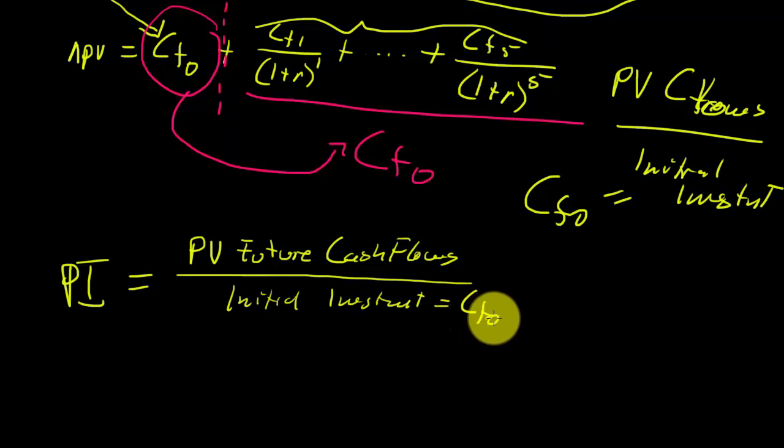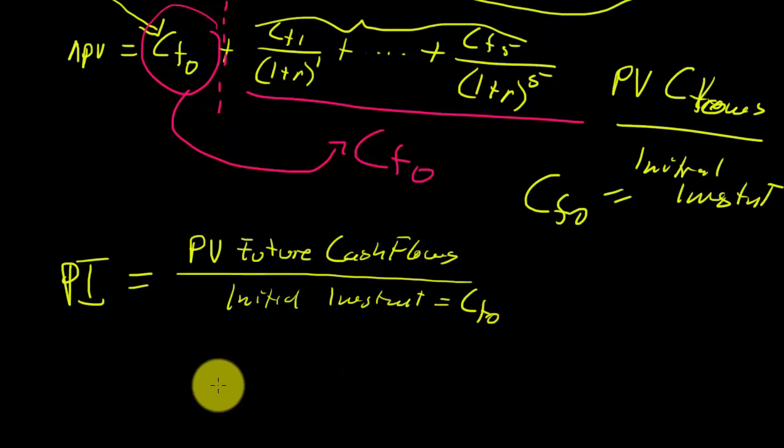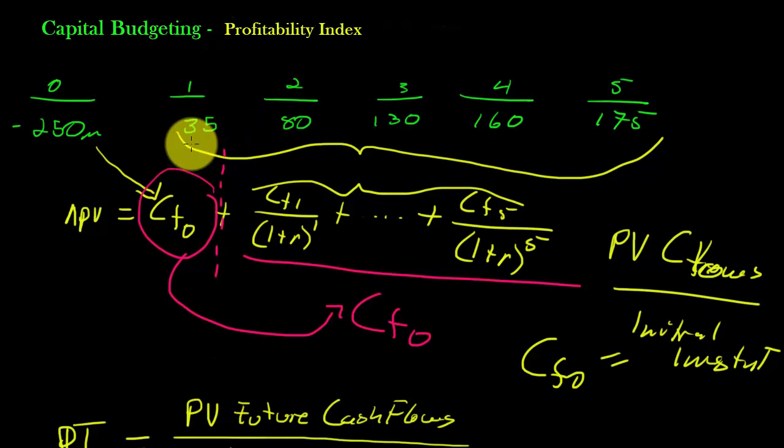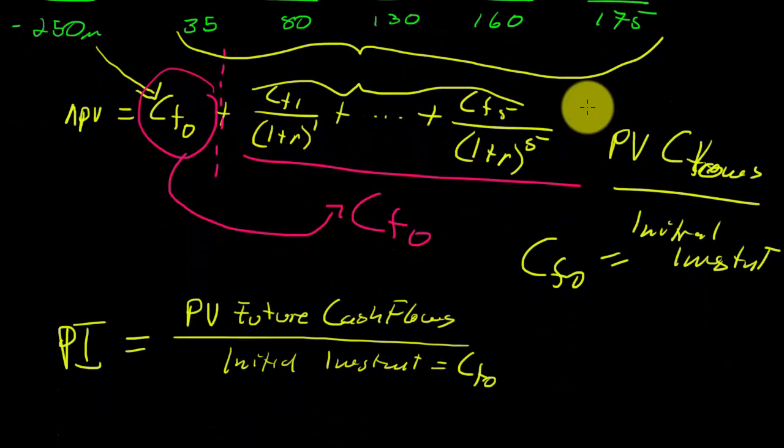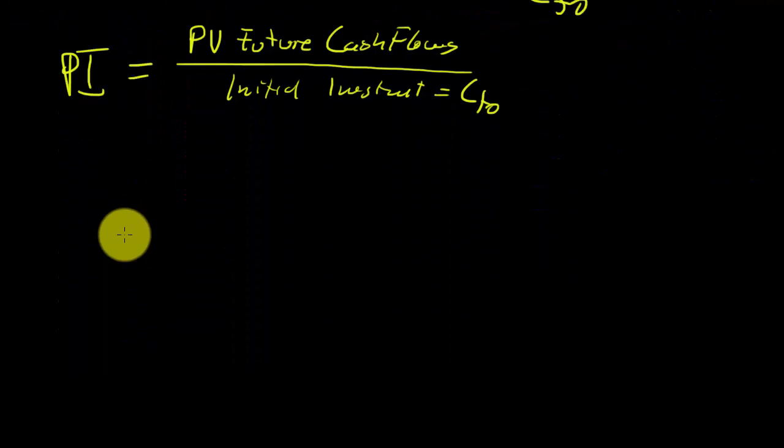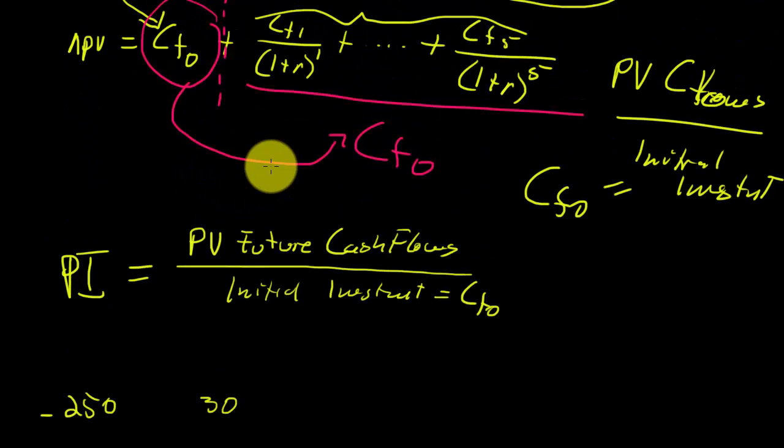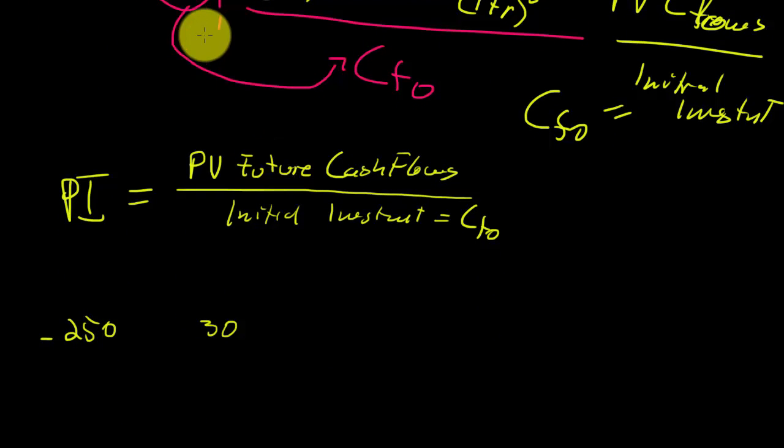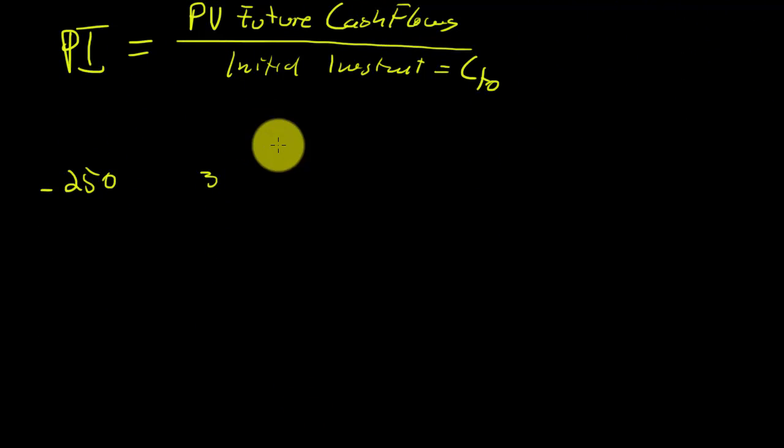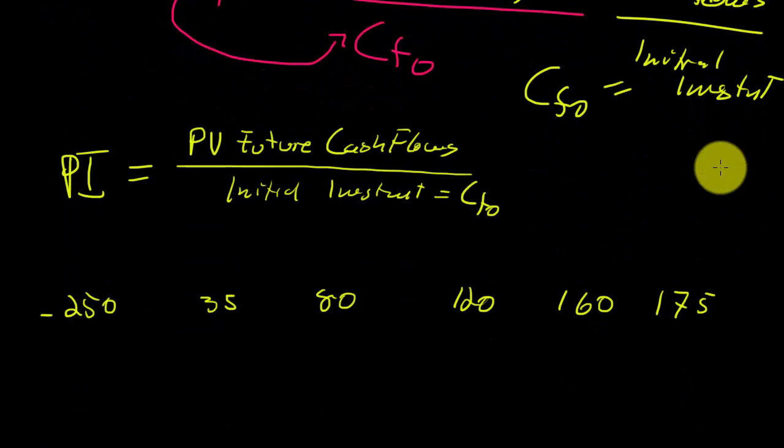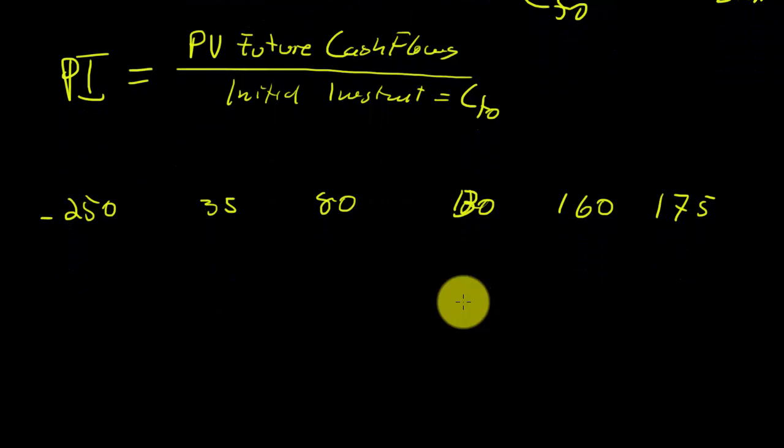This is also known as cash flow zero. And so that's not going to be particularly difficult, except that I need to compare this one guy against all of these all in the same time period. So let's write them down again. I've got my negative 250, and then I have 35, 80, 130, 160, and 175. Now we're ready.